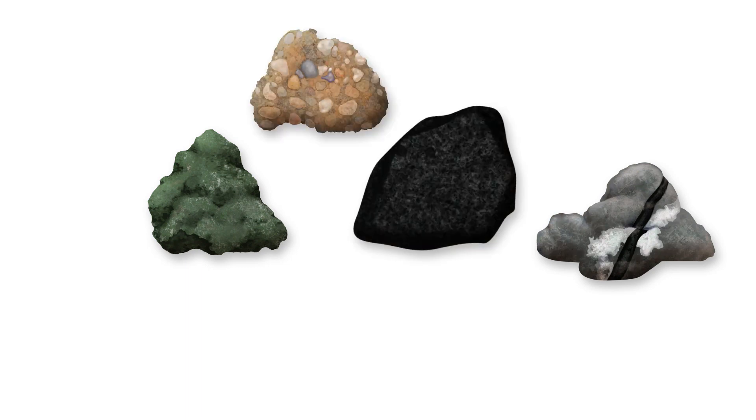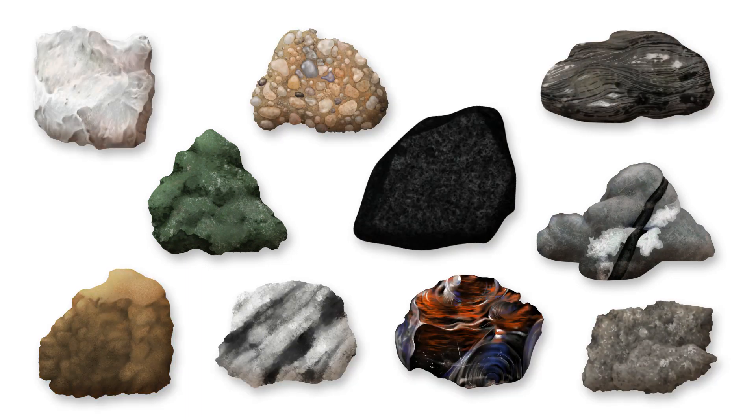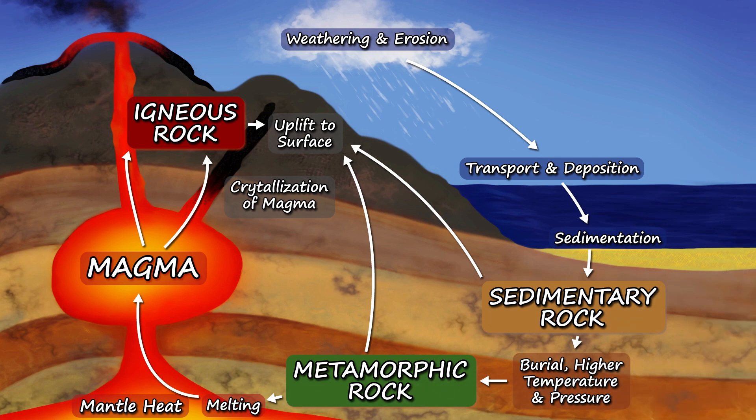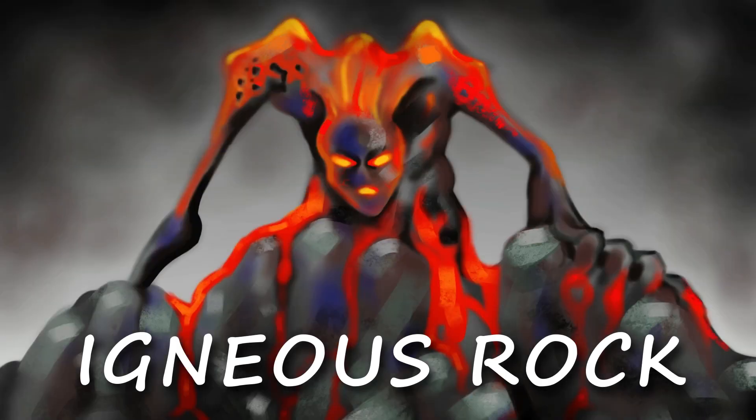Have you ever wondered where rocks with so many different colors and textures come from? This is explained by the rock cycle, which features three types of rocks: igneous, sedimentary, and metamorphic, which can all change into one another.